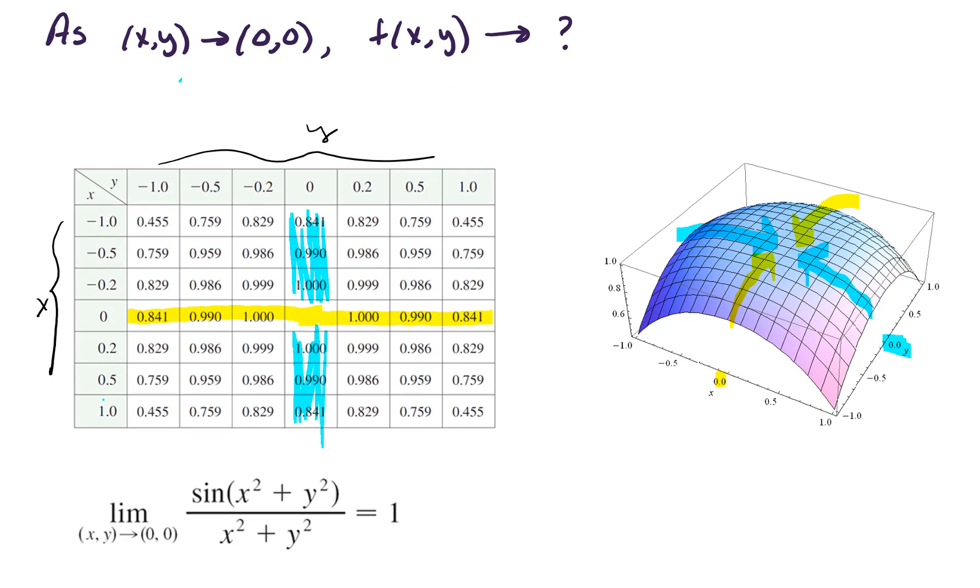So this is the idea that no matter what direction we come in at, even if we came in along maybe a diagonal path, or some other crazy line, no matter what kind of path we take, our z value as x, y go to 0, 0, our z value approaches 1. That was great.